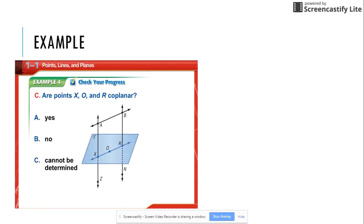Here is an example. Points X, O, and R are coplanar. So here is X, here is O, here is R. X, O, and R are completely contained by the blue plane T, or plane T. They are completely contained by that, so the answer is yes.